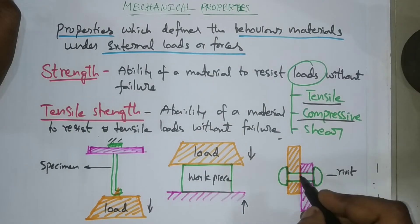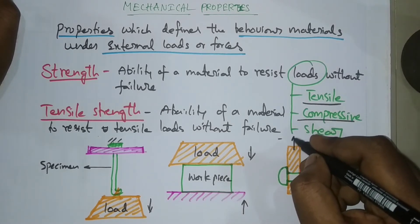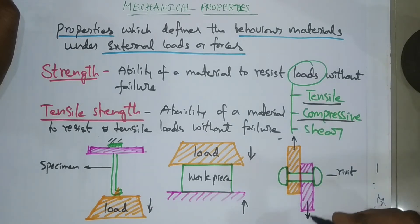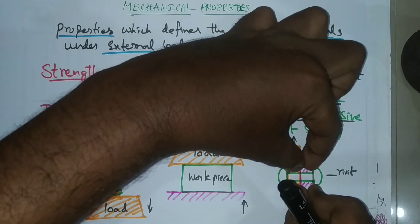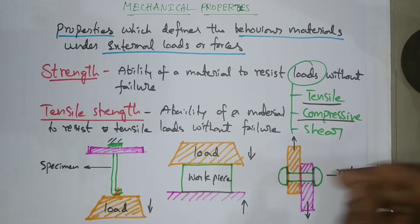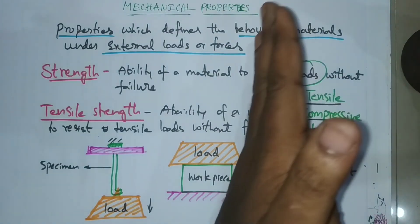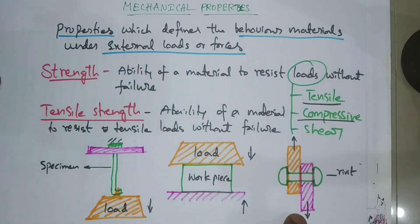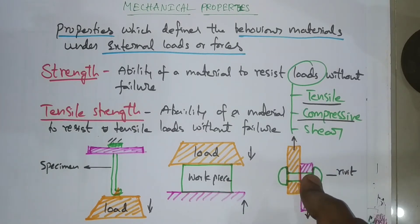Next, shear strength example: consider two sheets joined by a rivet. We need to apply a load acting in opposite directions on the two sheets. The load acts in this direction on one sheet and in the opposite direction on the other. The rivet connecting them experiences this opposing force.